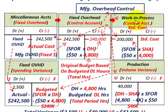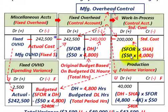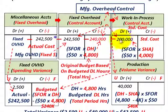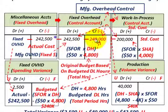Moving to work-in-process, we record the standard cost for fixed overhead. That's the standard fixed overhead rate of $50 per hour times the standard hours allowed of 4,000 hours for the month, giving us $200,000 as the standard fixed overhead cost. We compare that to the actual cost of $242,500 and to the $240,000 based on denominator hours to determine our variances.